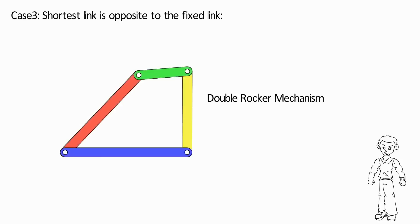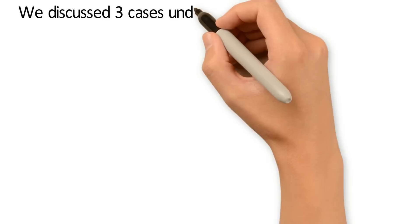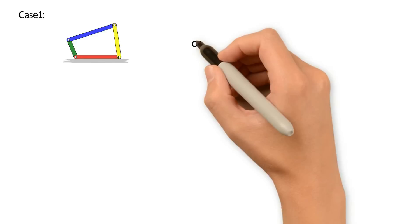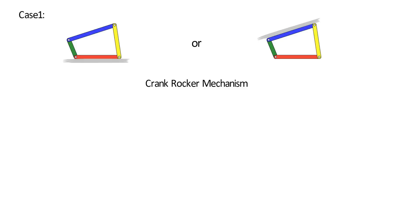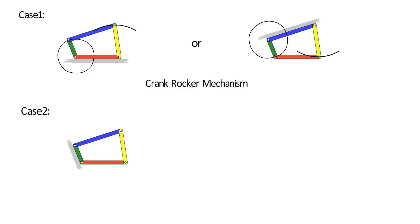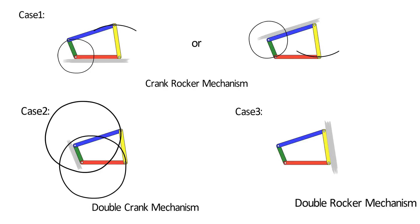Can you tell which link is rotating in this mechanism? It is the coupler, that is the green link, which is also the shortest link. Correct. We discussed three cases under the condition S plus L less than P plus Q. To summarize: Case 1 — the link adjacent to the shortest link is fixed; this configuration is the crank rocker mechanism. Case 2 — the shortest link is fixed; this configuration is the double crank mechanism. Case 3 — the link opposite to the shortest link is fixed; this configuration is the double rocker mechanism.